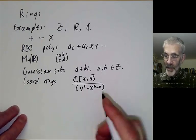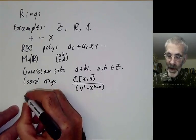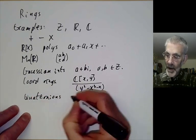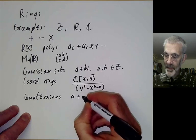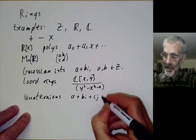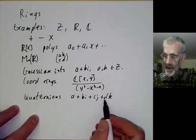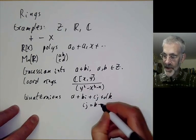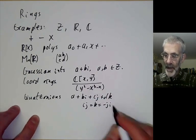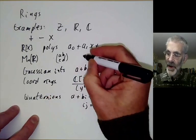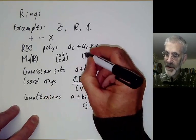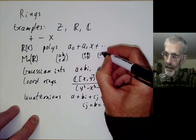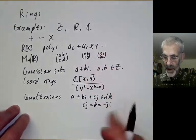A slightly more exotic example might be the quaternions, which are all numbers of the form a + bi + cj + dk. These are non-commutative: ij = k = −ji. And of course matrices are generally non-commutative — if you look at two particular matrices they don't commute with each other.